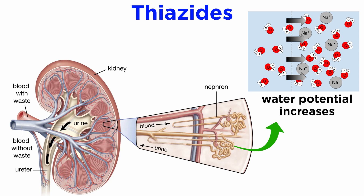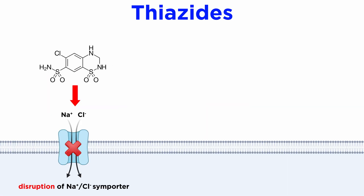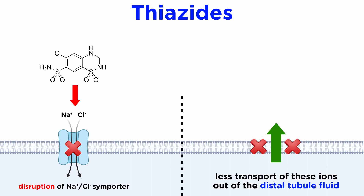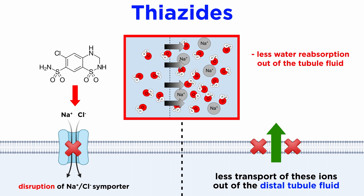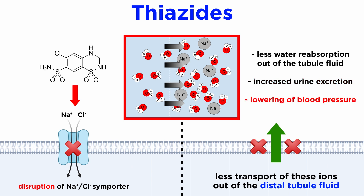As a result of the sodium chloride symporter, the water potential of the tubule fluid increases, and water will follow the ion transport via an osmotic pressure gradient. When thiazides disrupt the function of the sodium chloride symporter, there is less transport of these ions out of the distal tubule fluid. This in turn leads to less reabsorption of water by osmosis out of the tubule fluid, and after transport through the rest of the nephron leads to increased urine excretion and a lowering of blood pressure through reduced water reabsorption.